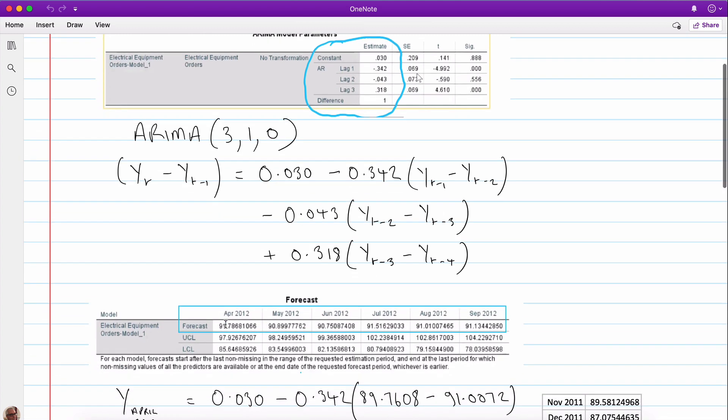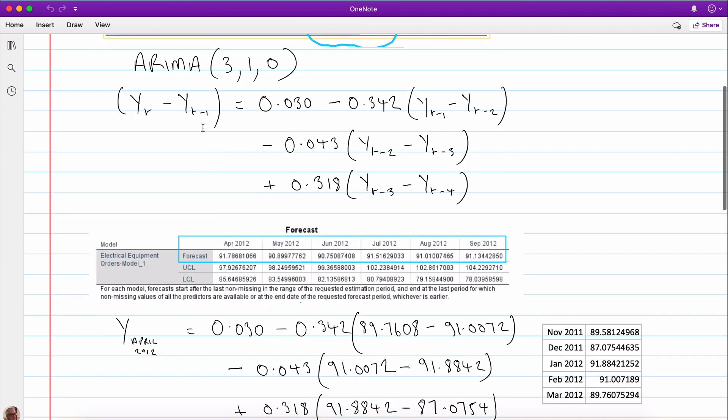Now of course we can use this equation to generate these forecasts here, these are the ones produced by the software by SPSS. So let's look at how we might calculate that first forecast there for April 2012. Remember the data went up to March 2012, so the first forecast period was April 2012.